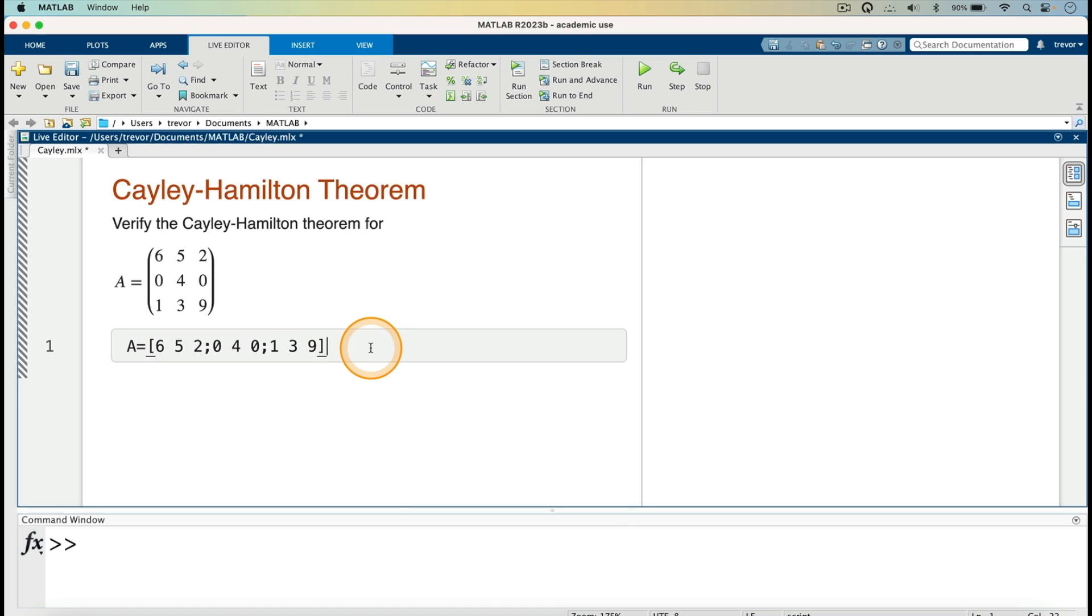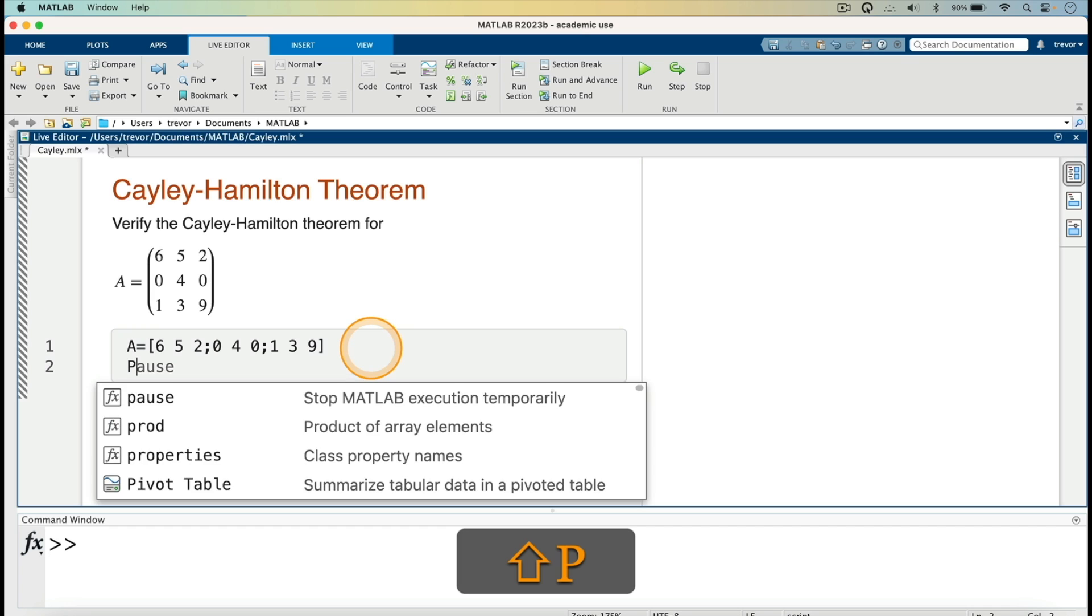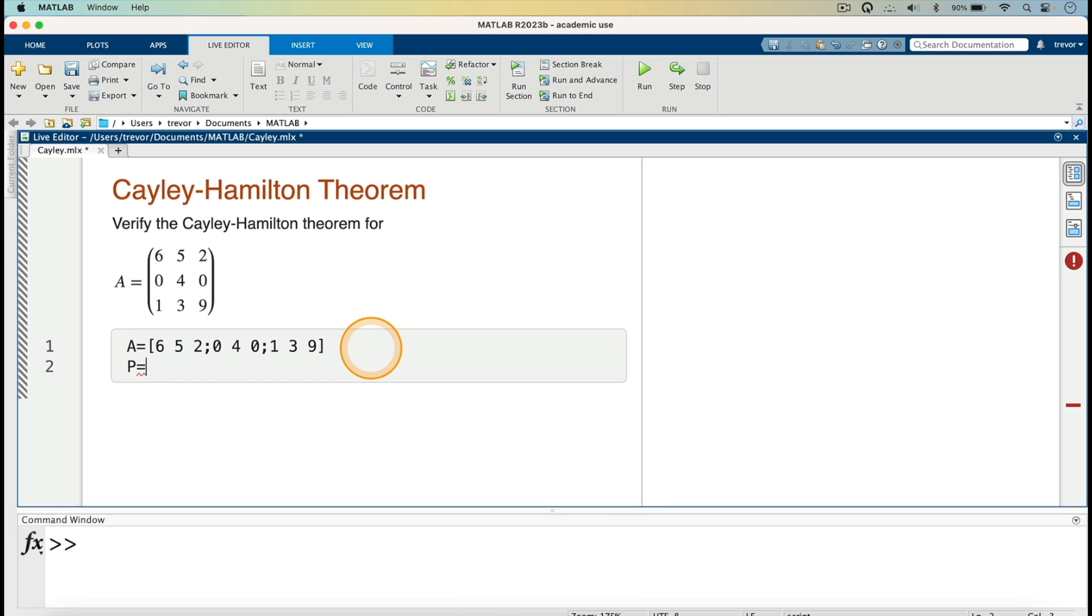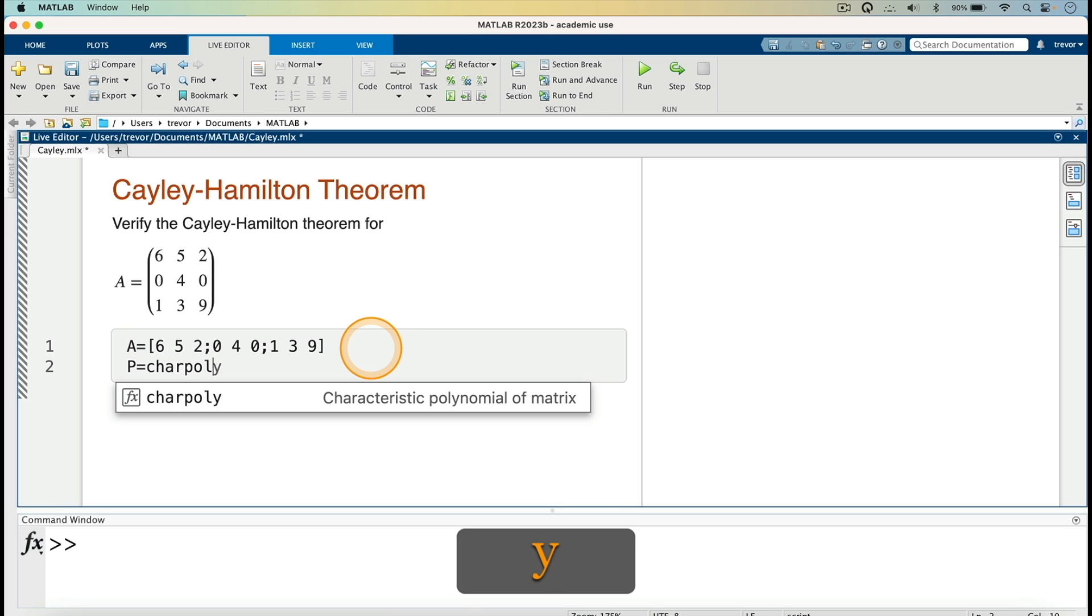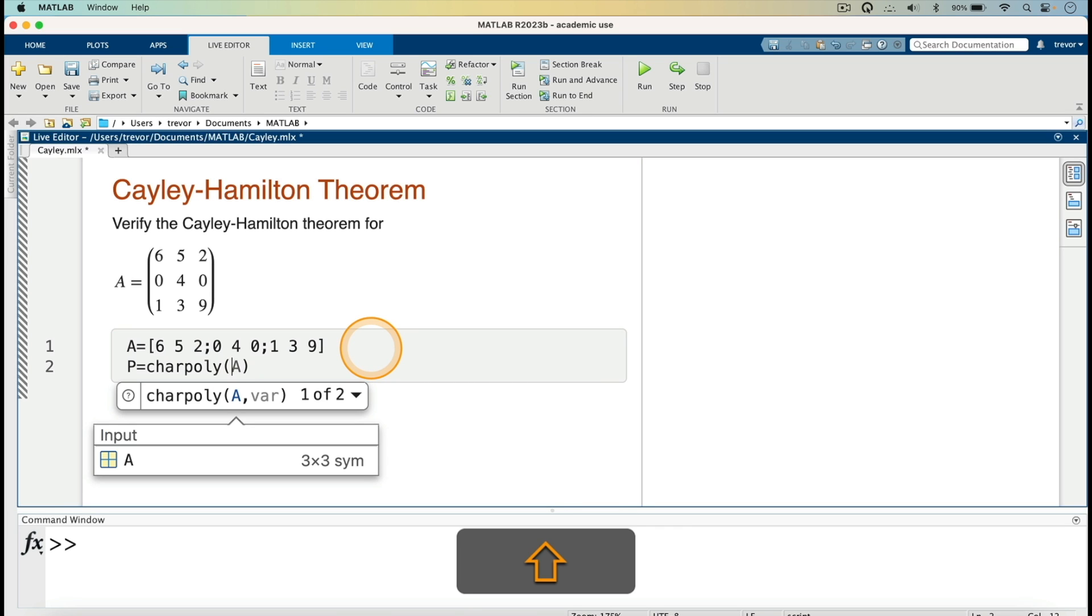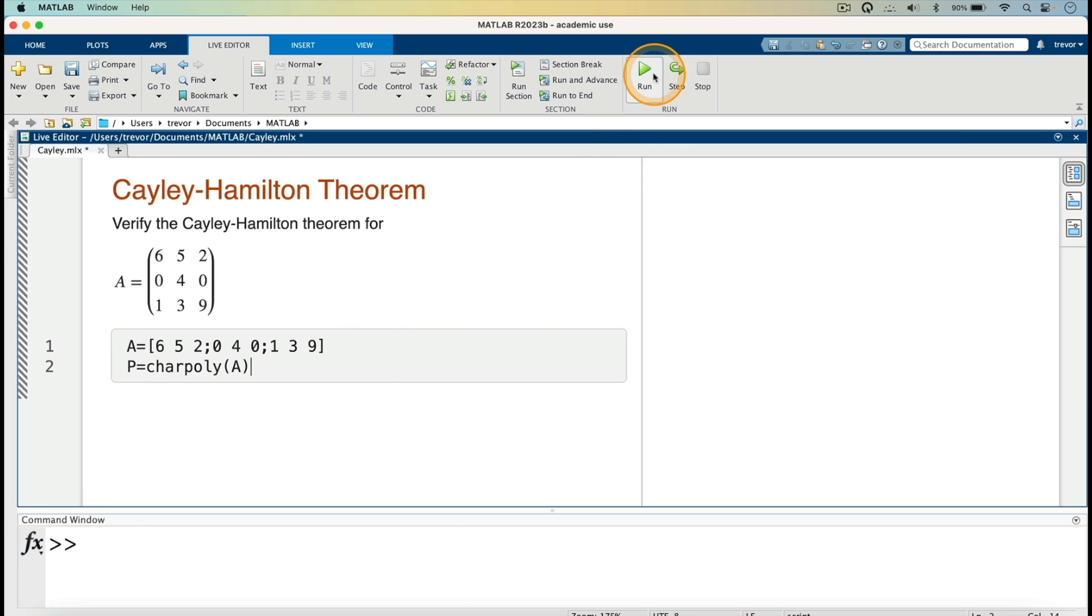And we will then need to evaluate its characteristic polynomial. So I will call that polynomial P there, and I will say equals to. So the function that we use is charPoly, open parenthesis, and then we are finding the characteristic polynomial of the matrix A there. So I can just run here.